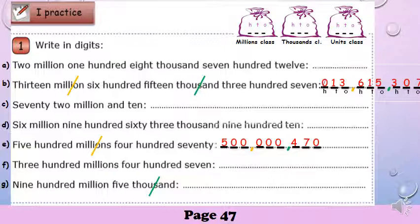We have four hundred seventy in the units class. Four hundred — we write four in the hundreds. Seventy — seven in the tens. And we have no ones, so we write zero. Now, the next one.